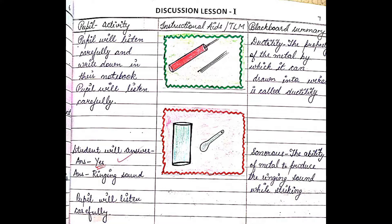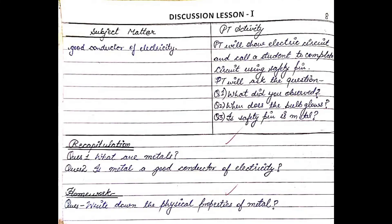After that, I have done another activity on good and bad conductors of metals with the help of an electric circuit. Then I have done the recapitulation, and in the end I have given the homework question.